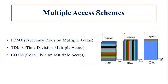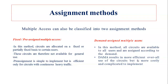Regarding assignment methods — how we assign slots — in FDMA we assign particular frequency slots, and in TDMA we assign a number of slots on a time basis. There are two types of assignment: fixed or pre-assigned multiple access, and demand assigned multiple access.